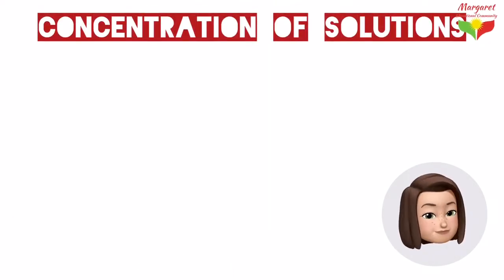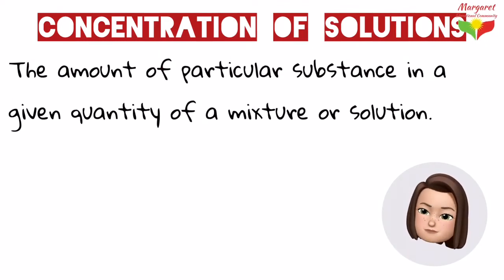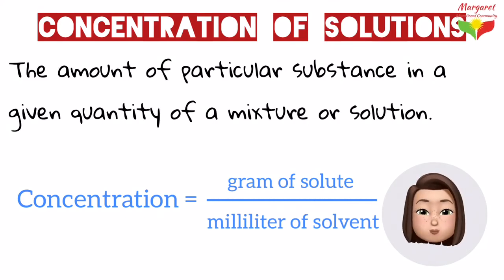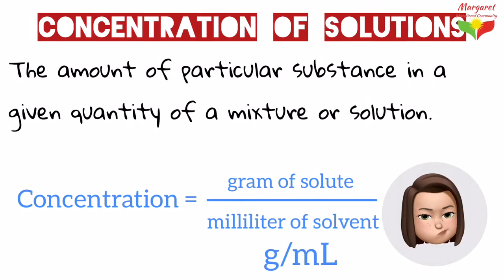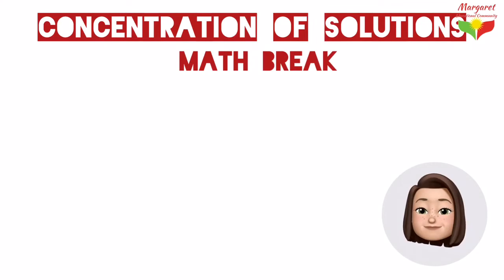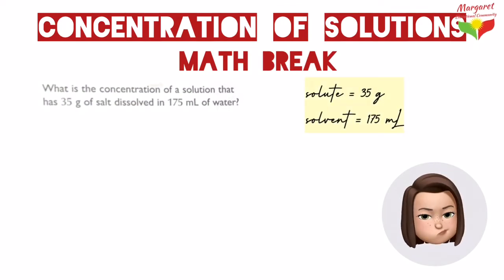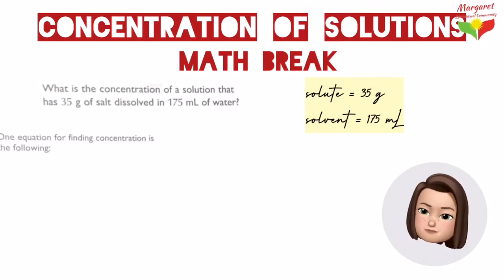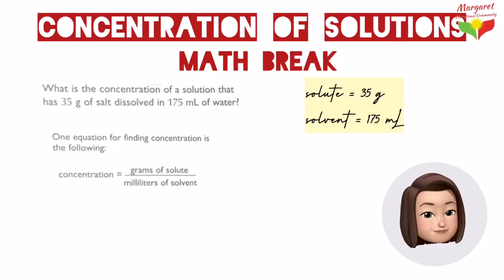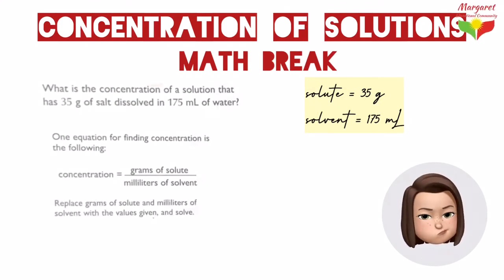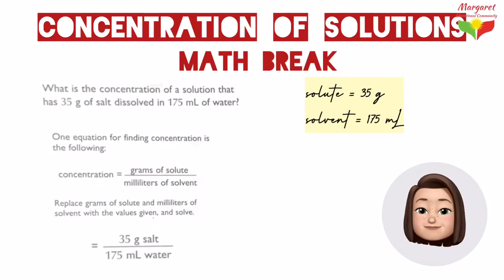Now, about the concentration of a solution: concentration is the amount of a substance in a given quantity of mixture or solution. It can be expressed in grams of solute per milliliter of solvent, so the unit for concentration is g/mL. For example: what is the concentration of a solution that has 35 grams of salt dissolved in 175 milliliters of water? We have 35 g of solute and 175 mL of solvent. Using the equation — grams of solute divided by milliliters of solvent — we get 35 ÷ 175 = 0.2 g/mL.